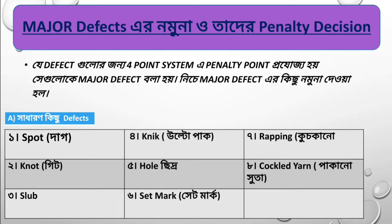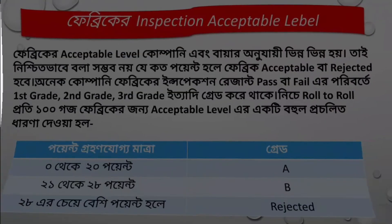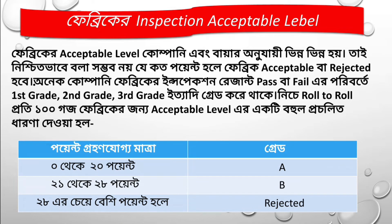The defect types include: Number 1 — nick; Number 2 — knot; Number 3 — yarn run; Number 4 — nick or drop stitch with hole; Number 5 — crease or hole; Number 6 — set mark; Number 7 — yarn/thread defect; Number 8 — cockled yarn or bowing; and various fabric inspection acceptable label categories.